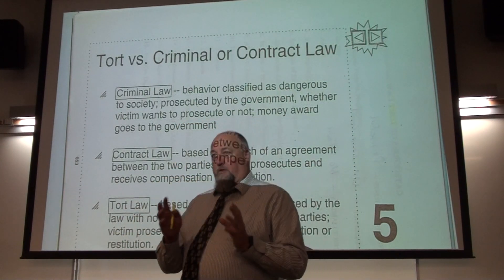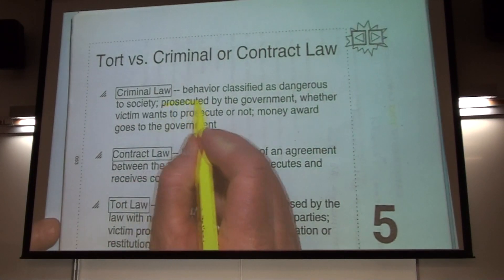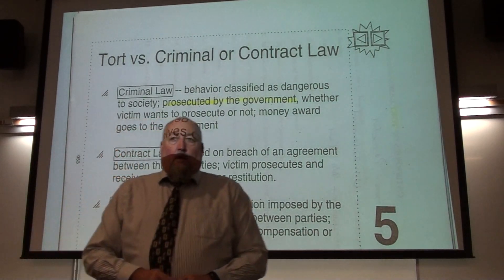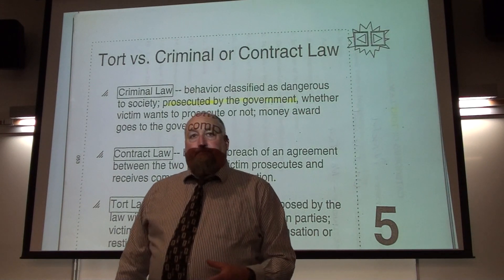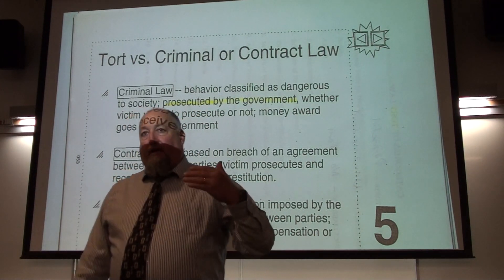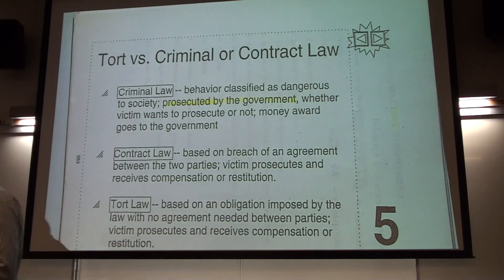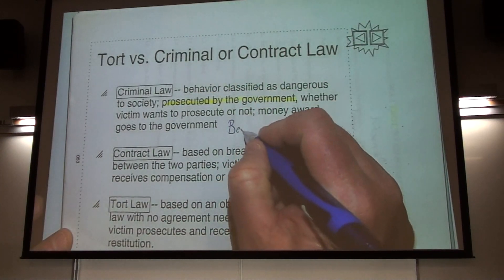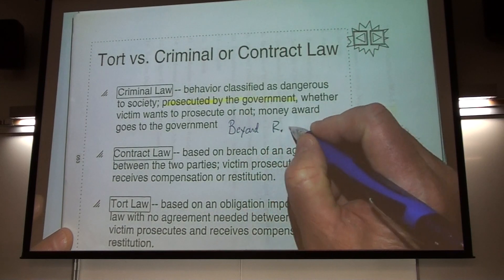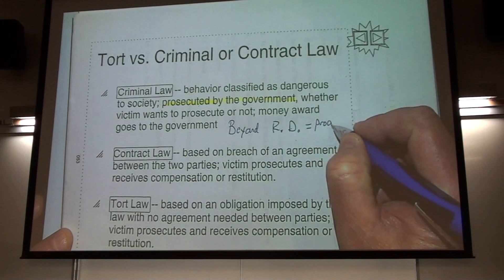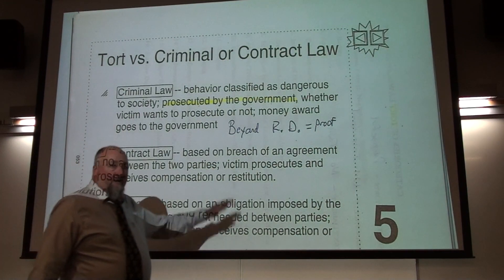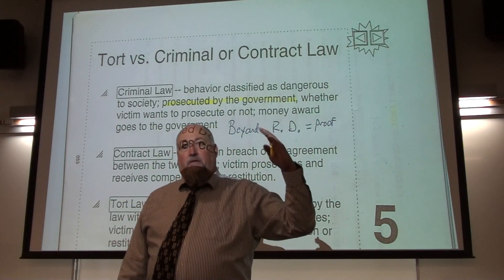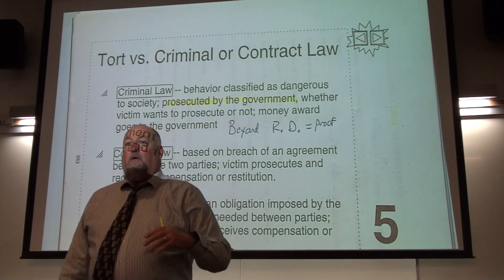Remember: if it's a criminal case, that can only be prosecuted by a government — either the federal government or a state government. The proof in a criminal case is at the highest level burden of proof, which is proof beyond a reasonable doubt — a very high standard.